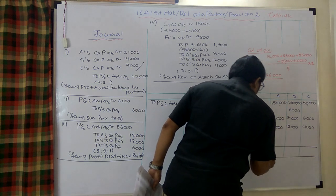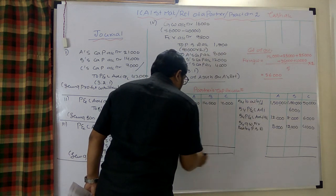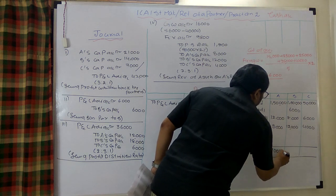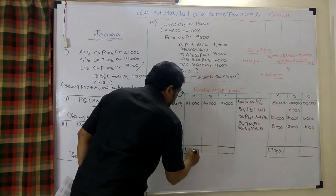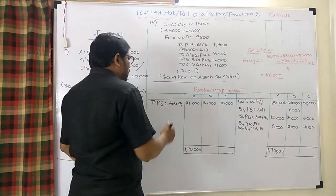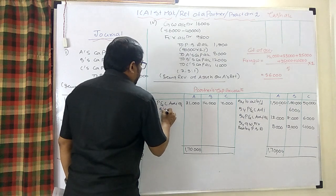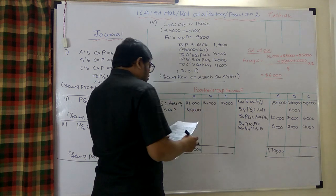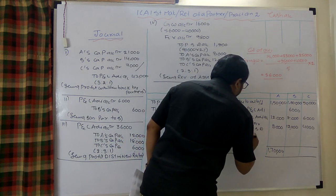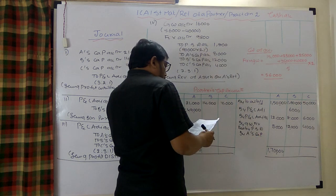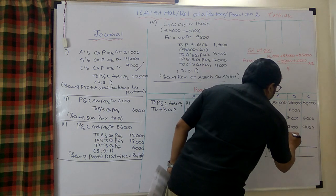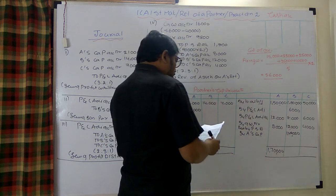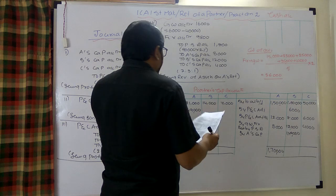Checking A's capital account: the credit total comes to 1,70,000. After all debits, the balance payable to A is 1,49,000. Entry: A's capital account debit to B's capital account — 1,49,000. In B's capital account, we credit by A's capital of 1,49,000.